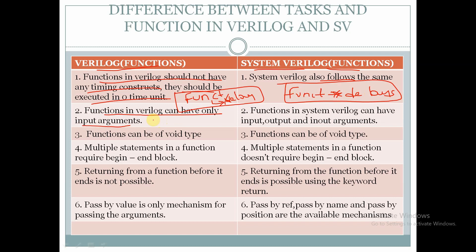Functions in Verilog can have only input arguments. For example, if we declare a function, the arguments of that function should be of input type only. Whereas functions in SystemVerilog can have both input, output, and inout arguments. In Verilog, functions cannot be of void type, whereas in SystemVerilog functions can be of void type.